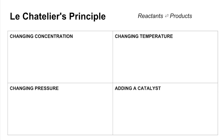We'll look at these four changes: concentration, temperature, pressure, and the addition of a catalyst, and we're going to look at what effect each will have on the position of the equilibrium.